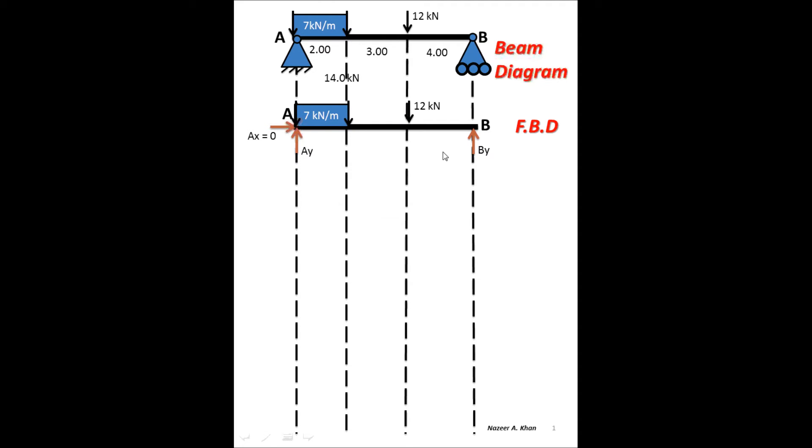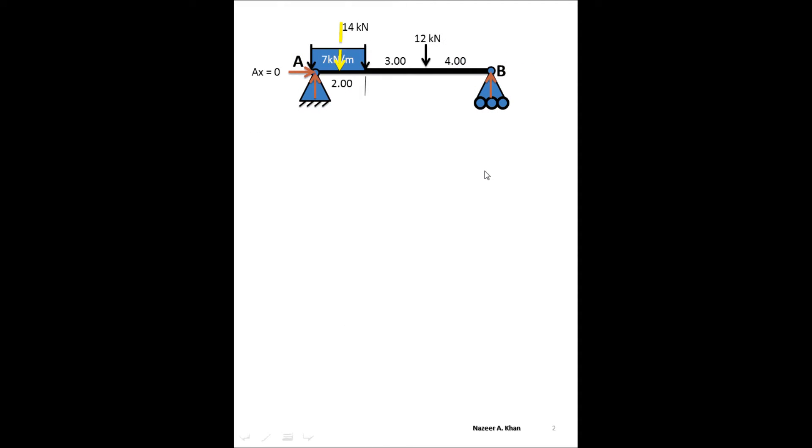The next thing to do is to calculate the magnitude of AY and BY. To do that, we have three equilibrium equations available to us. Those equations are summation forces in the X direction equals zero, summation forces in the Y direction equals zero, and summation moments equals zero. Let's go and look at the calculation for AY and BY.